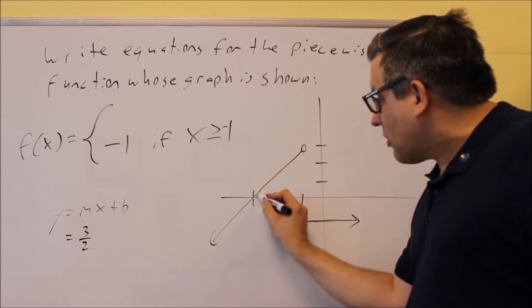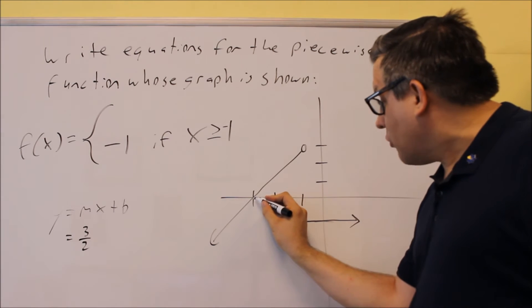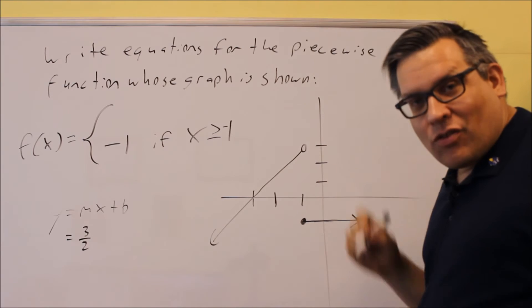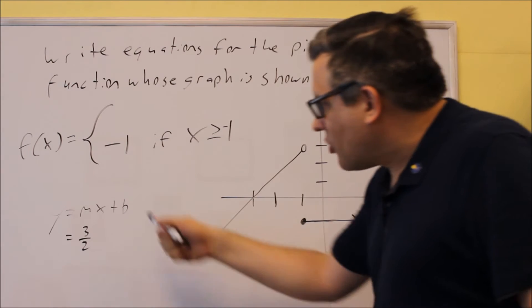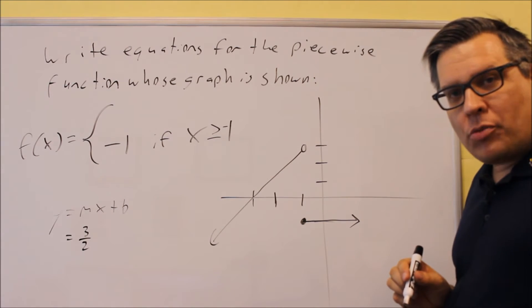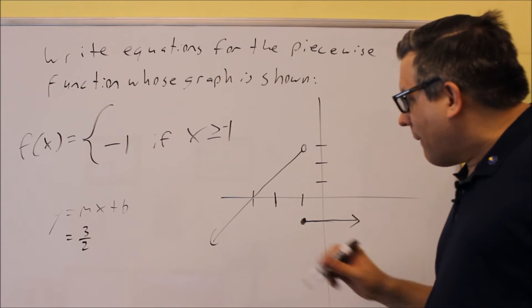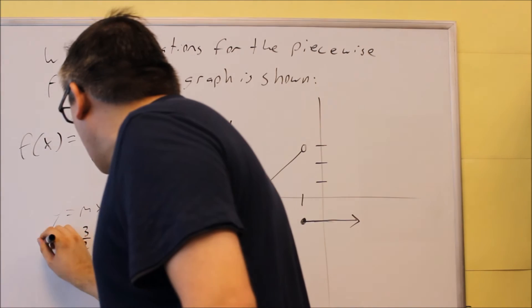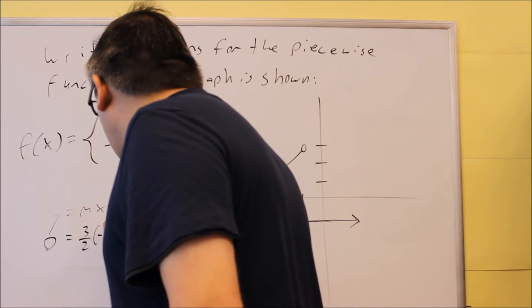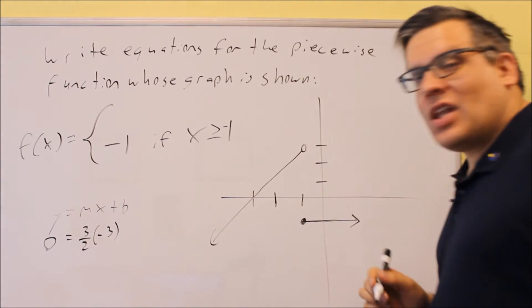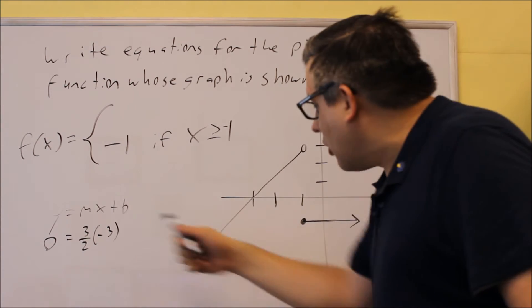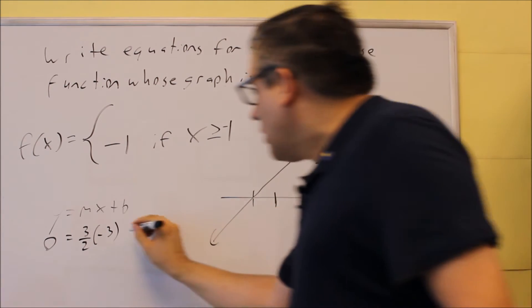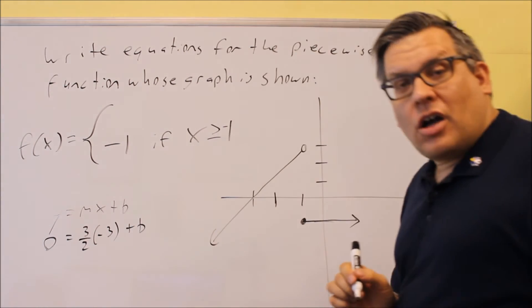Now, what I'm also given is I'm given a coordinate that it goes through. We know it goes through negative 3 comma 0. So in this y equals mx plus b formula, I can put in an x value of negative 3 and a y value of 0. So let's do that. The y value is 0, and I have a negative 3 that's going to go in there for x. I'm solving for b.